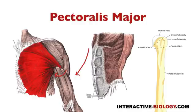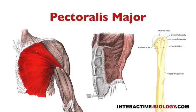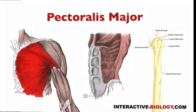So we have a number of different things this muscle can do because of its structure, because of how the fibers are running, and because of these different portions. Depending on how it contracts, you can move the arm in different ways.